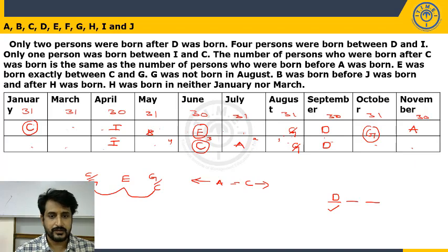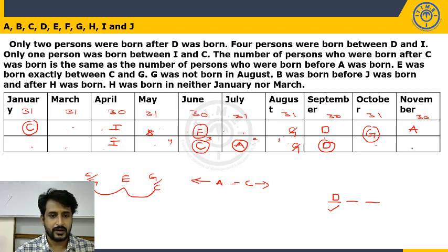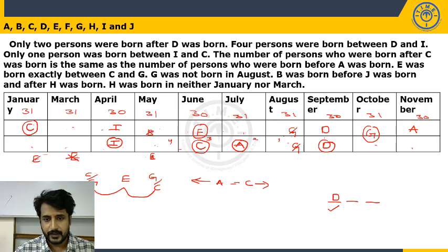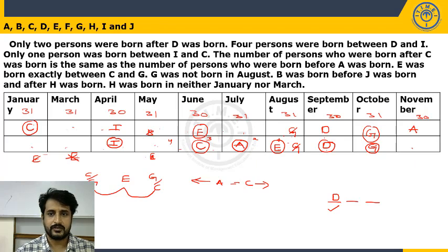Now let's analyze Case 2, where C is in June. A's position is fixed and D's position is fixed. Checking possible placements for E equidistant between C and G: if E is placed before C, G would fall outside the arrangement. If E is between C and A, one valid placement works — E is placed one gap after C, and G is placed one gap after E. This completes the placement for Case 2 as well.